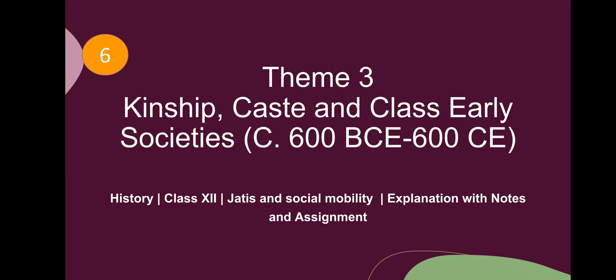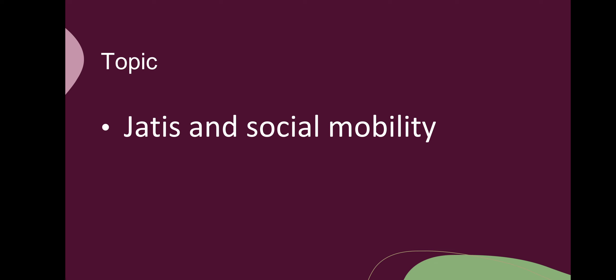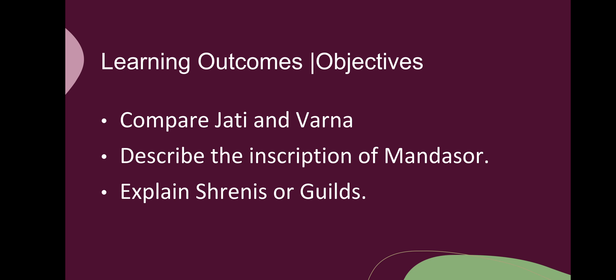Hello everyone, welcome back to part 6 of theme 3: kinship, caste and class in early societies, circa 600 BC to 600 CE. The topic we'll discuss today is jatis and social mobility. After the end of this video lesson, you would be able to compare jati and varna, describe the inscriptions of Mandasaur, and explain shrenis or guilds.